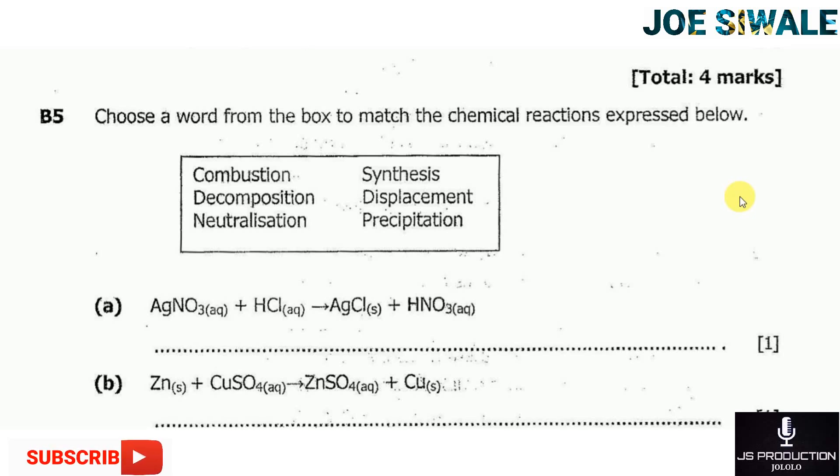Welcome to Chess Production. Today I will share with you the answers of science paper 2 of 2017, this past paper question of the GCE past paper. Specifically, I am going to share with you question B5 from section B. So the question reads, choose a word from the box to match the chemical reactions expressed below. So before we go further into the other questions, let us look at the definitions of these chemical reactions.